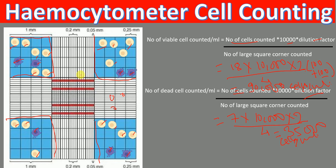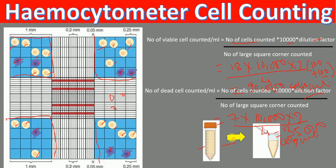One more thing I want to explain: when you observe under the microscope and find that there are a lot of cells that are difficult to count, you can dilute your original stock. For example, take 100 microliters from the falcon tube and add 900 microliters of media — that is a 1-to-10 dilution. You then follow the same counting process as before. To determine the number of viable cells per mL, perform the calculations with dilution factor 2 as usual, and then multiply your final result by 10, because we did a 1-to-10 dilution of the original stock.